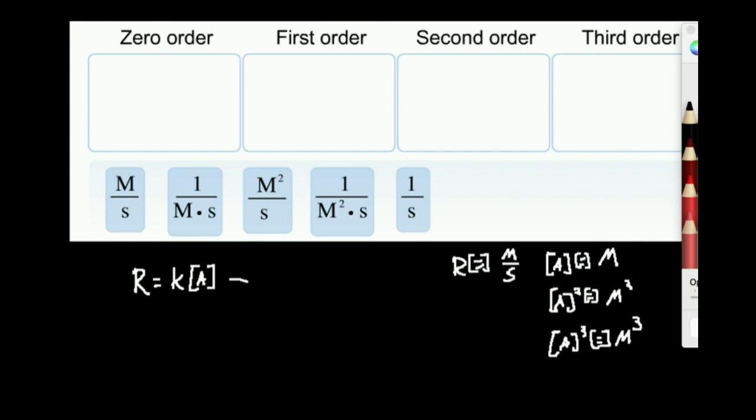So for a first order reaction, if I divide both sides by A, K is going to be rate over the concentration of A. So to figure out the units, let's do this. Rate is going to be molar per second divided by concentration to the first, that's just M. So M over S divided by M, hopefully you see M cancels.